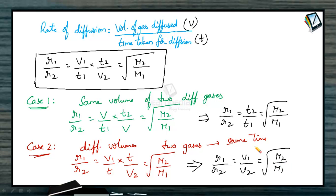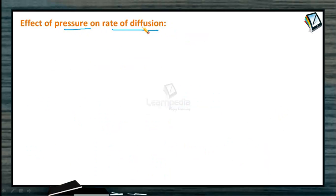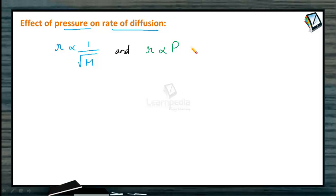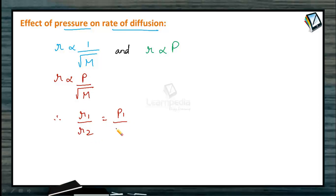Those are the various mathematical relations in Graham's law of diffusion. Now let us see the effect of pressure on the rate of diffusion. The rate of diffusion is inversely proportional to the square root of molecular mass. Additionally, rate of diffusion is directly proportional to pressure, because when more pressure is applied, more gas will diffuse. Combining both: R ∝ P/√M, so R1/R2 = (P1/P2) × √(M2/M1).